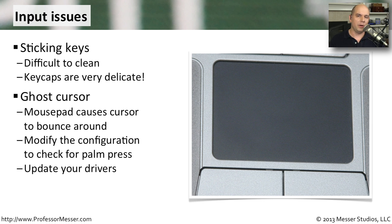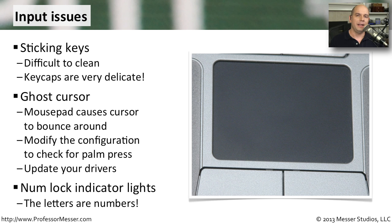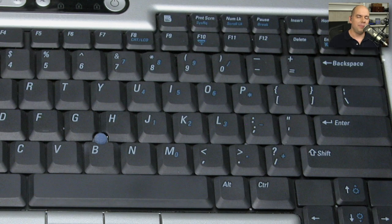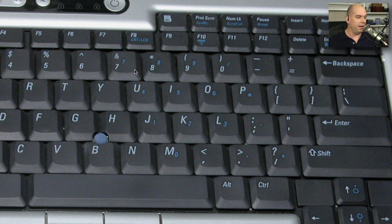If someone is using their keyboard and finding that keys are not producing the letters they need — and instead numbers are coming up — then it may be locked into a numeric keypad mode. Most laptops are too small to have a full-size numeric keypad, but they have secondary keypad assignments as function options. If the function key is locked, instead of a letter U you might get a number four, for example. If someone's having a problem typing, it may be something simple that's configurable in software.